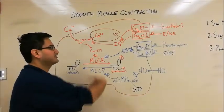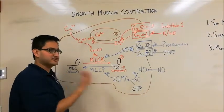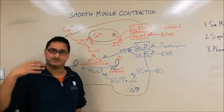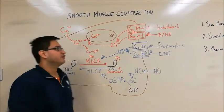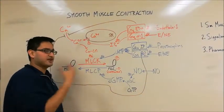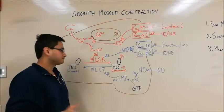Once calcium ions are in the cytosol, they bind to calmodulin, creating a calcium-calmodulin complex. This complex activates MLCK, which phosphorylates myosin and promotes muscle contraction. Therefore, endothelin-1 promotes smooth muscle contraction in arteries and is therefore a vasoconstrictor.